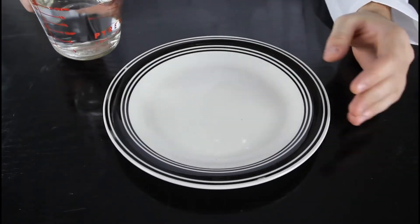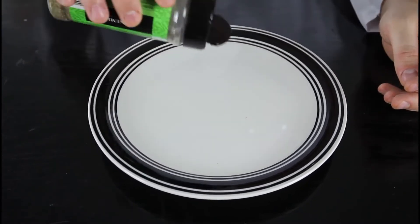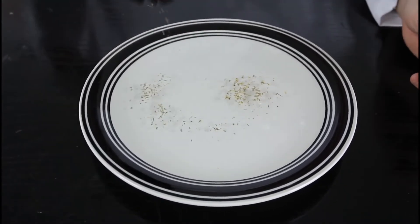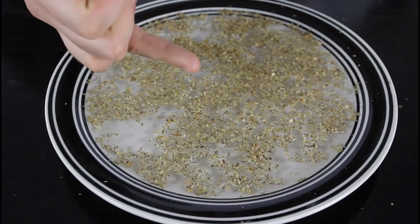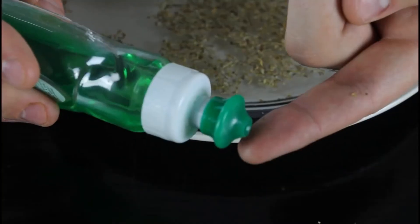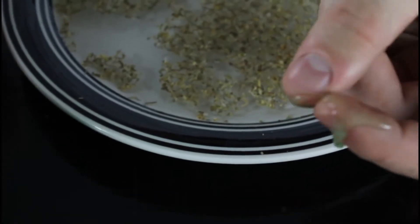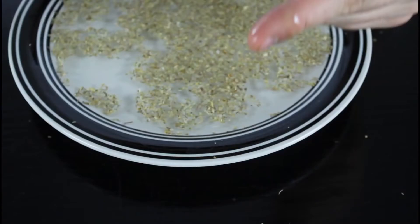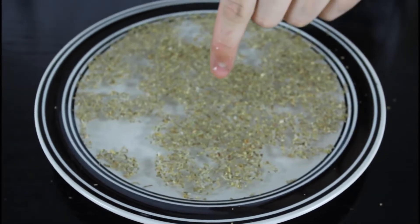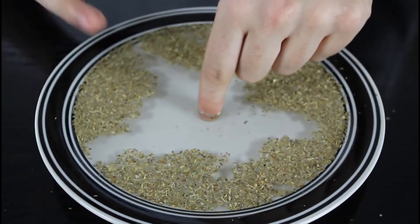For this one we're gonna get a plate, flat plate, fill it up with water. Then we're gonna grab pepper and sprinkle it on top of water. And if I touch it with my normal finger you see nothing happens. Alright, now we're gonna put a little bit of soap on our finger and soap it up a little bit. And then touch it again. See what happens? It's pushed away.